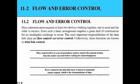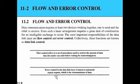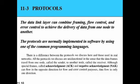Flow control refers to a set of procedures used to restrict the amount of data a sender can send before waiting for an acknowledgement. The data link layer is responsible for ensuring efficient conveyance of data from source to destination. If an error is encountered during transmission, the data link layer must rectify it and retransmit the data after receiving an acknowledgement.